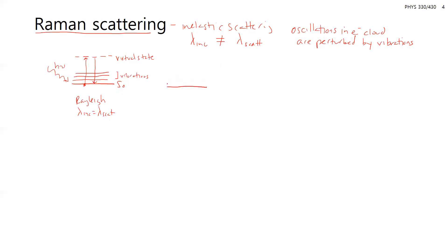In Raman, the vibrational levels come into play. Your electron goes up to this virtual state and when it relaxes back down, it relaxes to an excited vibrational state. If you start in the ground electronic state and relax to an excited vibrational state, this is called Stokes scattering. Your scattered wavelength is going to be larger than your incident — it's a lower energy — and you can see this in the diagram.